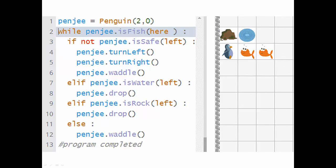We start png at 2-0 and enter the while loop, while png.isFish here. We then check the first part of our IF-ELIF-ELSE unit, if not png.isSafeLeft, which is true, and execute turn left, turn right, and waddle.